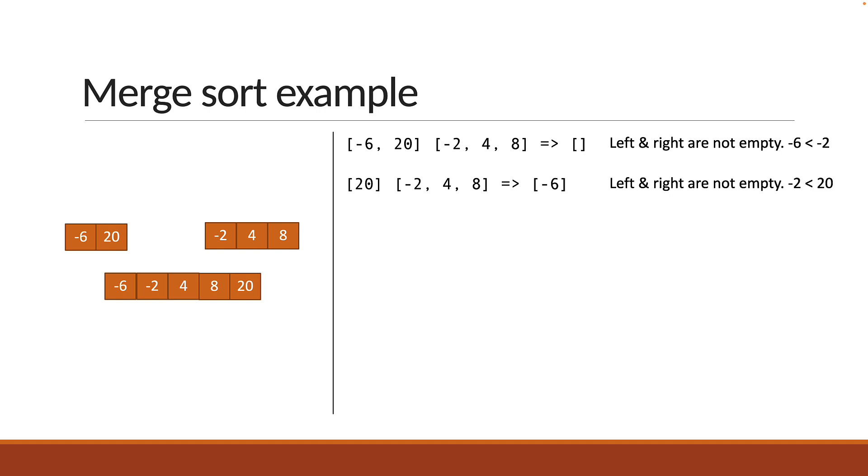Left and right are still not empty. Compare the first element in each array. Minus 2 is less than 6. So push minus 2 onto the temp array. The arrays are still not empty. Compare once again. 4 is less than 20. So push 4 onto the temp array.